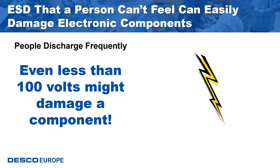Static electricity is a natural phenomenon that occurs in all climates and at all levels of relative humidity year round. Most people cannot feel an electrostatic discharge unless the static voltage is greater than 2000 volts. However, some electronic circuitry can be damaged by ESD events of less than 2000 volts, and the damage can occur without any sensation. When a wrist strap is worn properly and connected to ground, the person wearing it will stay near ground potential.